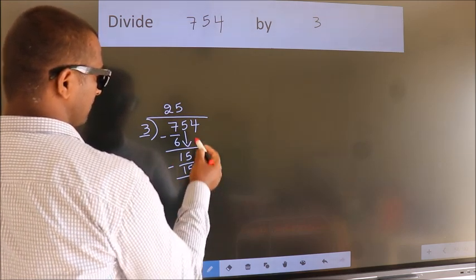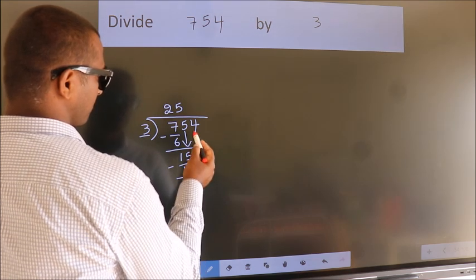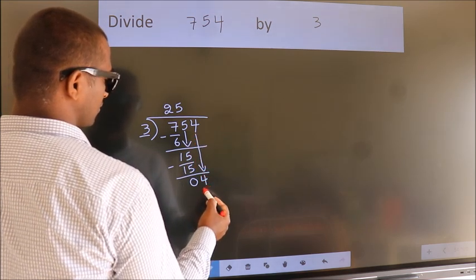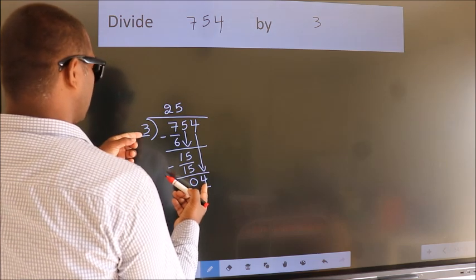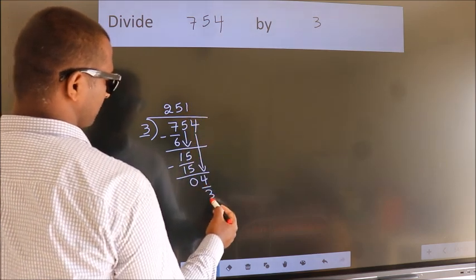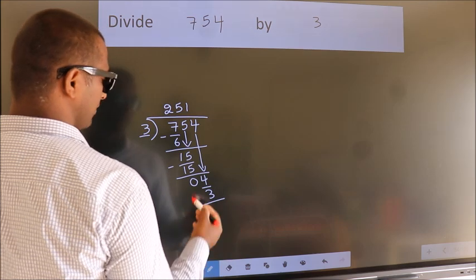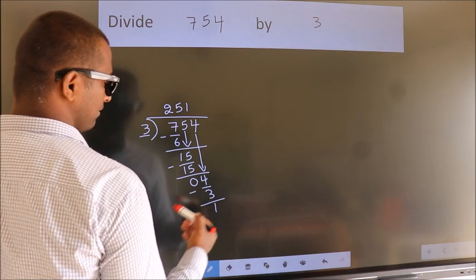After this, bring down the beside number. So 4 down. So 4. A number close to 4. In 3 table is 3 1s, 3. Now we subtract. We get 1.